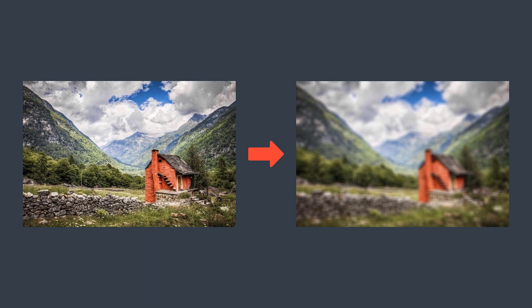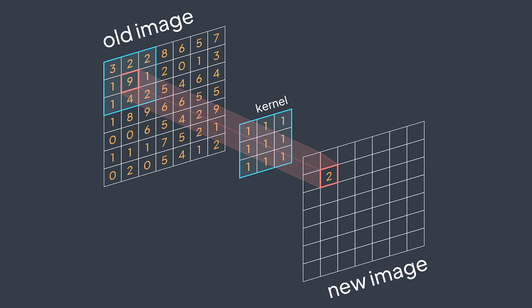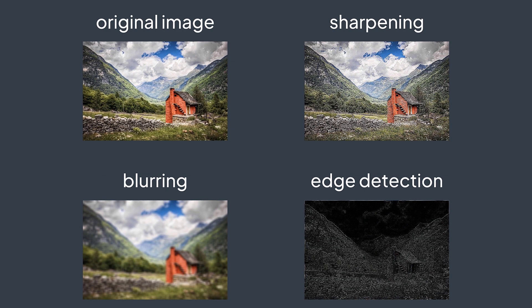Blurring an image is a popular image manipulation, but have you ever wondered what happens behind the scenes? This is what we will see today. In image processing, a kernel, also known as a convolution matrix, is a small matrix that gives us the ability to apply effects on an image, like sharpening, blurring, and edge detection.